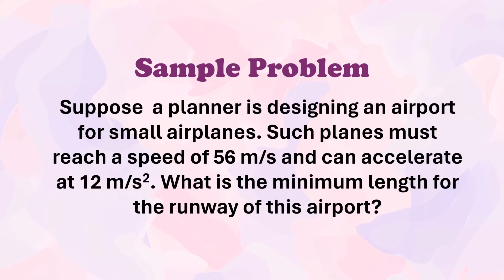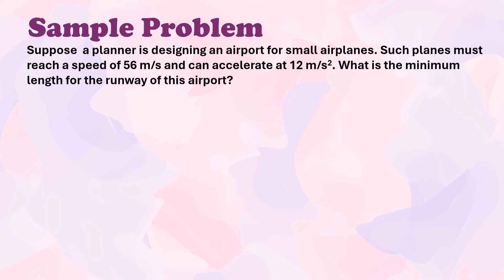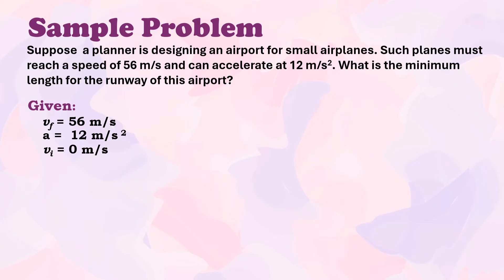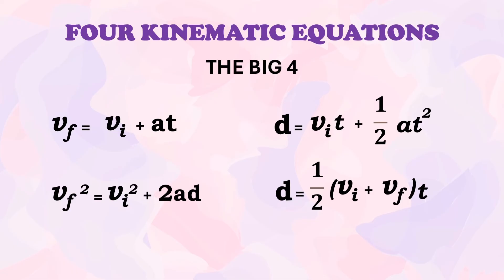Suppose a planner is designing an airport for a small airplane. Such planes must reach a speed of 56 m/s and can accelerate at 12 m/s². What is the minimum length for the runway of this airport? Let us identify the given: final velocity = 56 m/s, acceleration = 12 m/s², initial velocity = 0 m/s. The unknown is displacement.